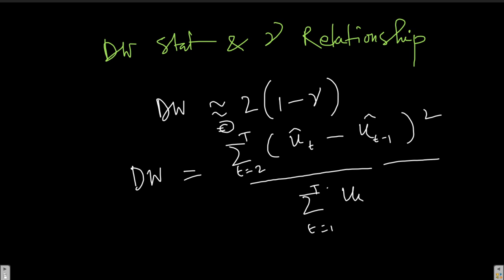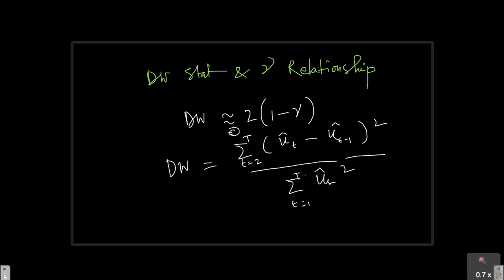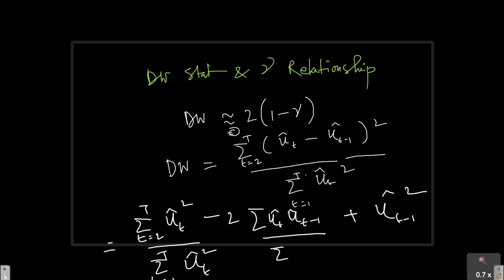Now let us just expand the term on the numerator. We can definitely do that. It will be t equals 2 to t. We have ut hat square minus 2 into ut hat ut minus 1 hat plus ut minus 1 hat square, and in the denominator since I have ut hat square for all of these terms,